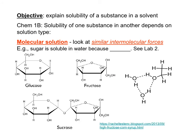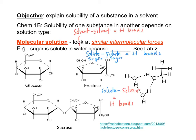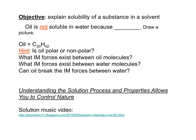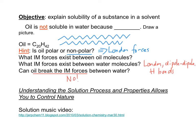Sugar is soluble in water because sugar forms hydrogen bonds to other sugar molecules, and sugar can break the hydrogen bonds between water molecules and form hydrogen bonds to water molecules. Oil is not soluble in water because the large oil molecule is non-polar, meaning only London forces exist between oil molecules. Those London forces are not strong enough to break the hydrogen bonds between water molecules.